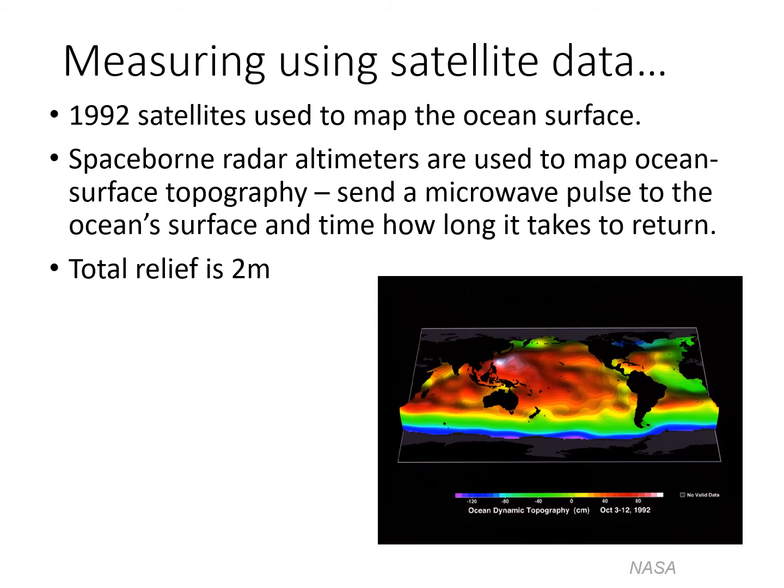Starting in 1992, satellites were used to measure sea level. Radar altimeters send a microwave pulse to the ocean surface and, based on the return time, the ocean surface can be mapped as shown here.